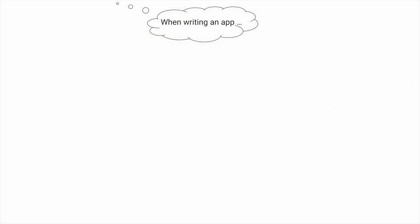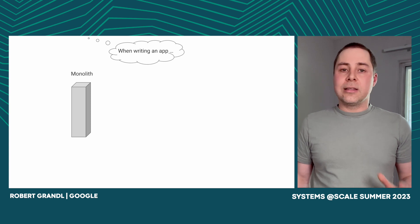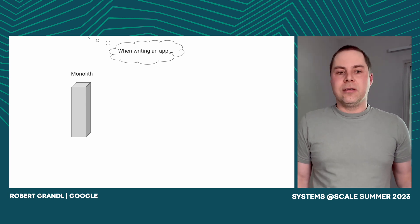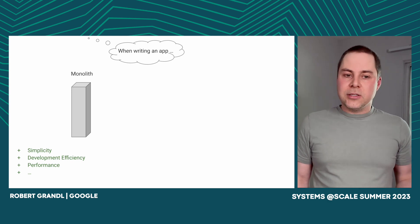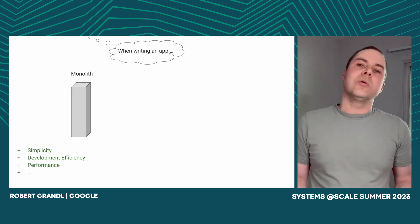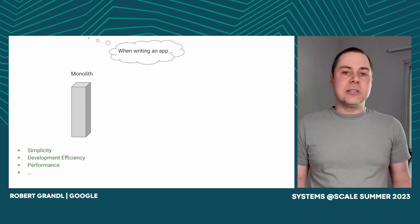Back in the day, when we wrote our applications, we used to write a monolith — structuring the application in a single binary where the components are tightly connected with each other and they communicate through method calls. This architecture was great. It was simple to develop, deploy, and maintain your application, and also performant because all the components were interacting through local method calls and shared memory within the same process.